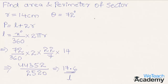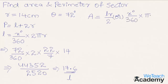Now let us find the area of the sector. The area of a sector is given by the formula lr divided by 2, or else x degrees divided by 360 degrees into pi r squared. In this case let us use the formula lr by 2, as we already know the value of l.